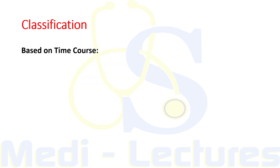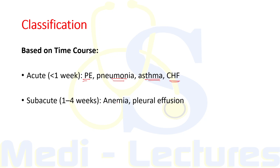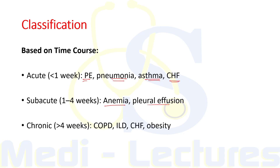When we consider the classification of dyspnea, it is based on time course. We have to ask the patient when the dyspnea started, as grouping causes based on duration helps narrow down differentials significantly. Acute causes — present for less than one week — include pulmonary embolism, pneumonia, asthma, and congestive heart failure. Subacute is one to four weeks, including anemia and pleural effusion. Chronic dyspnea, present for more than four weeks, includes COPD, ILD, congestive heart failure, and obesity, which causes dyspnea through restriction as part of restrictive lung disease.